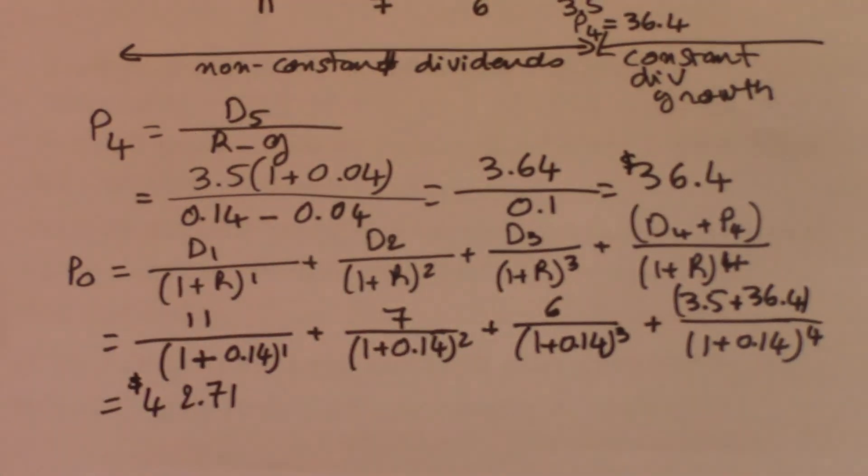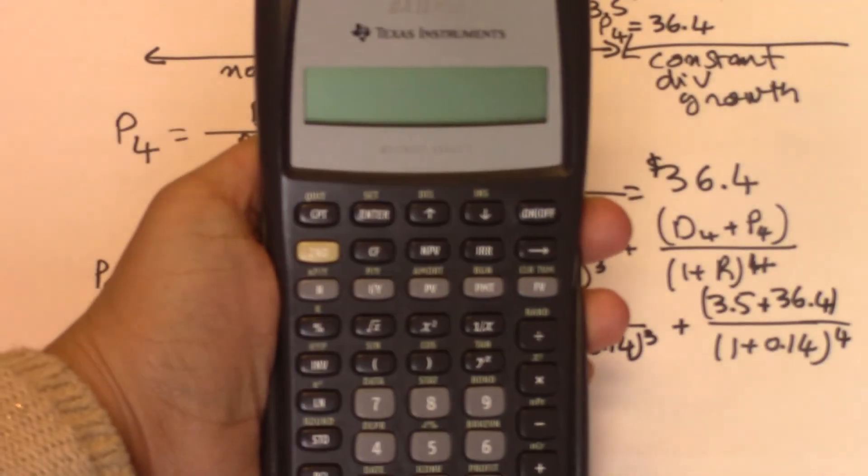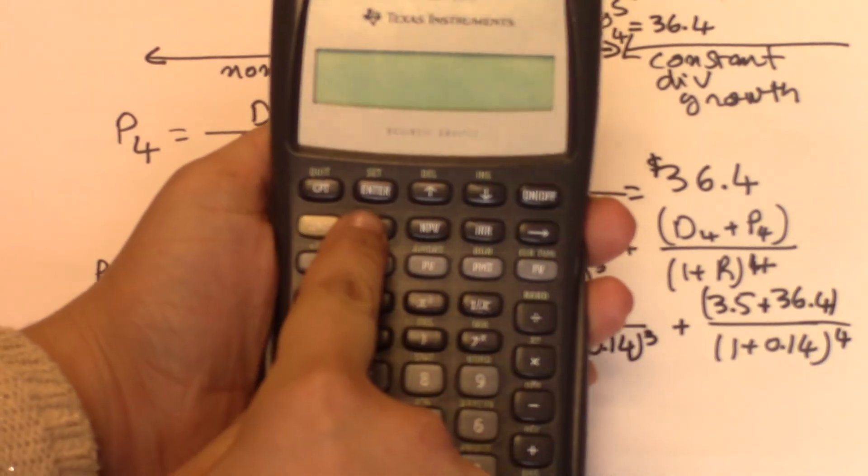We can also get to this number using the financial calculator using the CF and the NPV buttons. Here's what we input. CF, second, CE/C to clear all your work, and then you hit CF again.